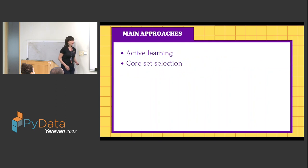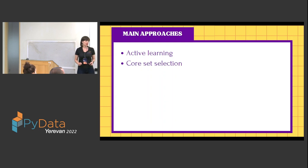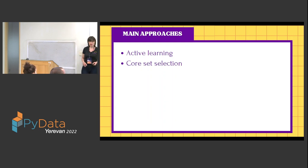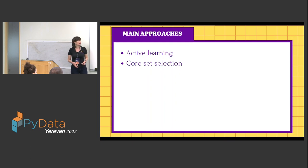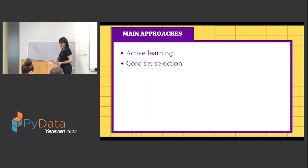There are two main approaches to tackle the dataset optimization problem: active learning and core set selection. Let's talk about active learning first.